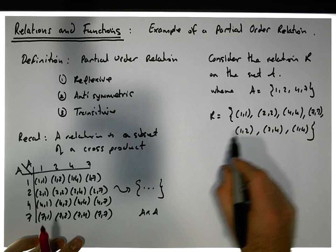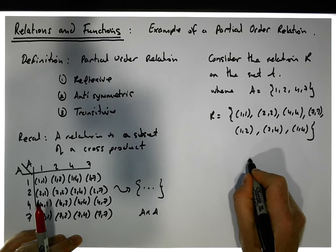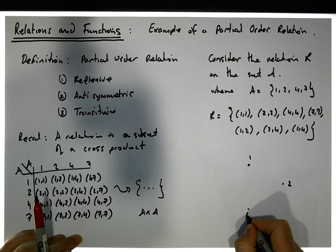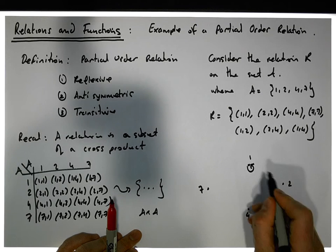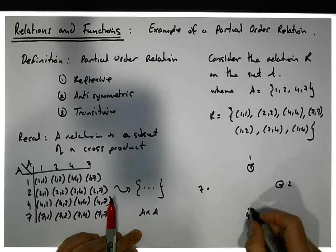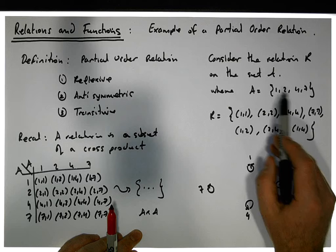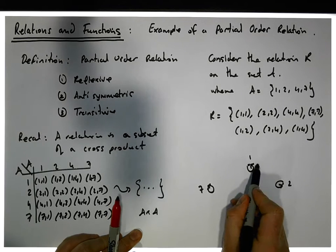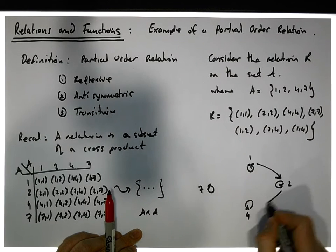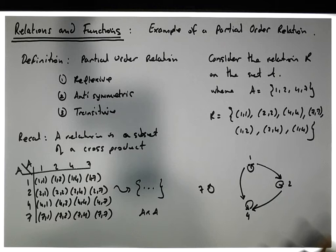If we draw the digraph of this relation, the values in A are 1, 2, 4 and 7. We have a self-loop on each node: 1 is taken to 1, 2 is taken to 2, 4 is taken to 4, and 7 is taken to 7. That's how you know the relation is reflexive — there are self-loops on all values in the base set. But 1 is also taken to 2, 2 is taken to 4, and 1 is taken to 4, so there are additional directed edges between those nodes. This is our particular relation.